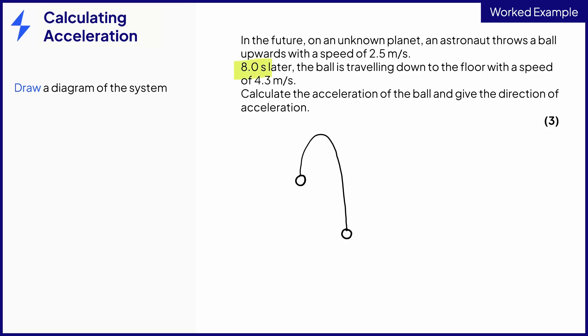The time taken is 8.0 seconds. Its initial velocity is 2.5 meters per second upwards, and has the symbol u. And its final velocity is 4.3 meters per second downwards, and has the symbol v.